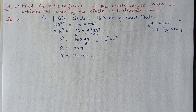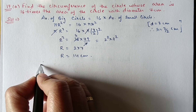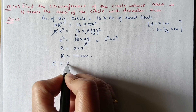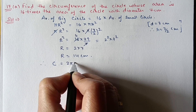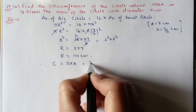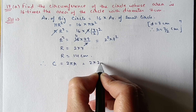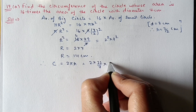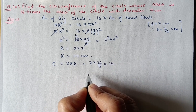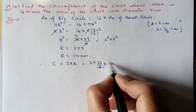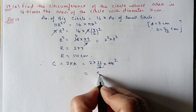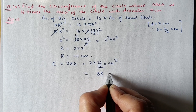Therefore circumference = 2πR = 2 × 22/7 × 14 = 88 centimeter.